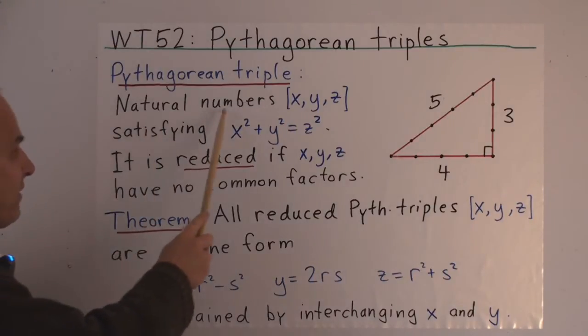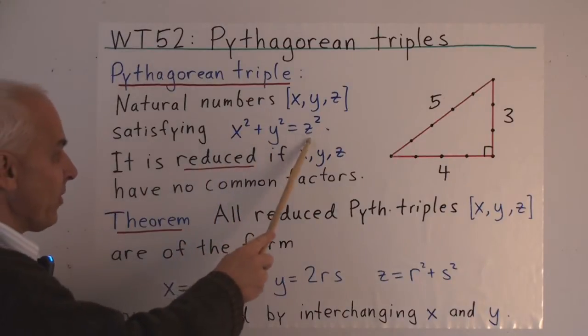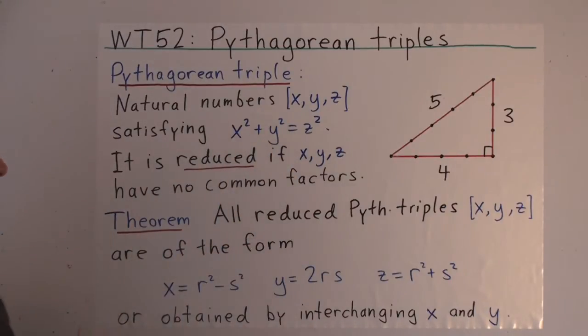So our general definition: if we have natural numbers x, y, and z satisfying x²+y²=z², then we say that's a Pythagorean triple.